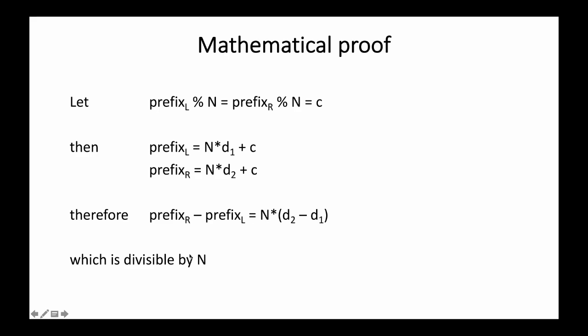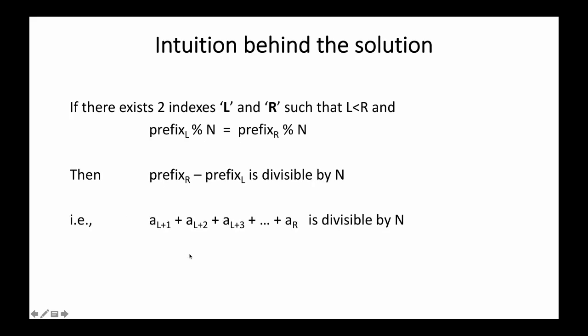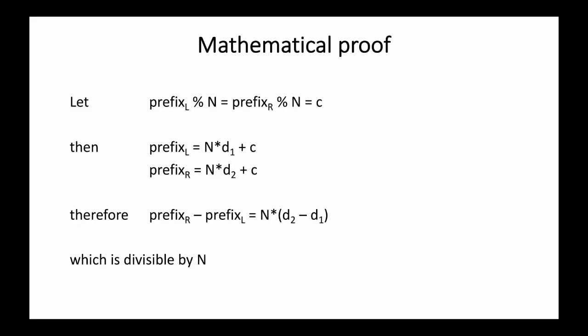So prefix_r minus prefix_l, which denotes a_{l+1} plus a_{l+2} until a_r, is divisible by n. We have now reached the key insight: if we can find two indexes l and r such that prefix_l mod n equals prefix_r mod n, then we have found our solution.